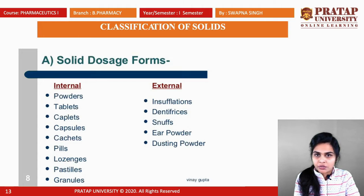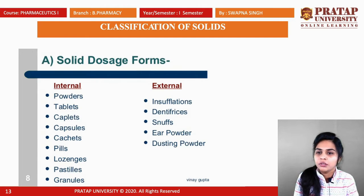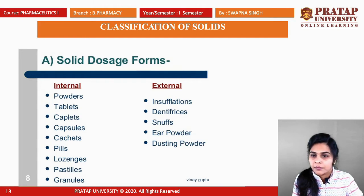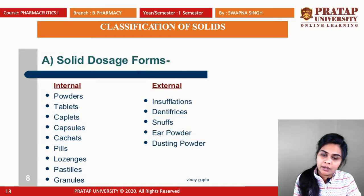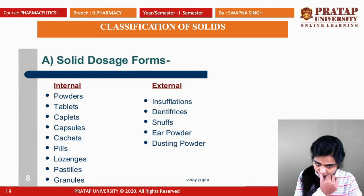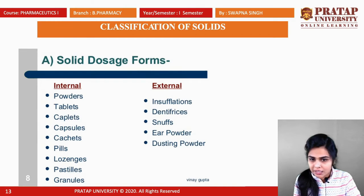For a broad classification of individual dosage forms: solid dosage forms are divided into internal and external. Internal solid dosage forms include powders, tablets, capsules, cachets, pills, lozenges, pastilles, and granules. External solid dosage forms include insufflations, dentifrices, snuff, and dusting powders.